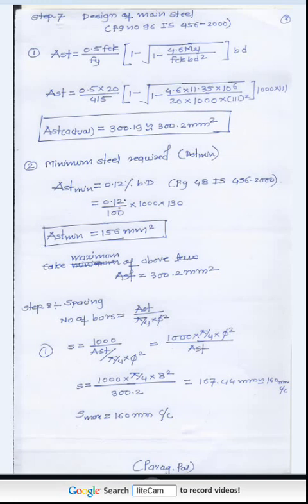Minimum steel requirement: For Fe415, Ast_min = 0.12% of B×D, from page 48 of IS 456-2000. The maximum of the two Ast values is 300.2 mm², so we consider Ast = 300.2 mm².